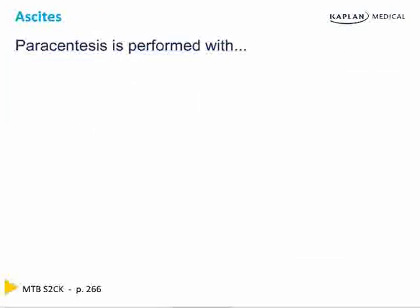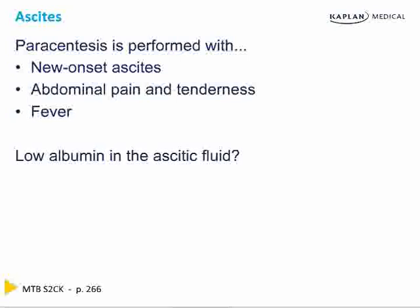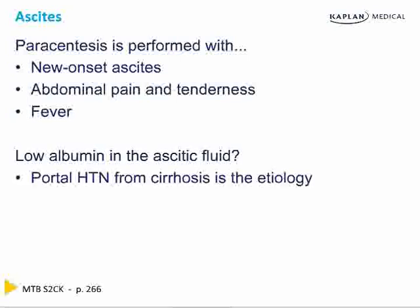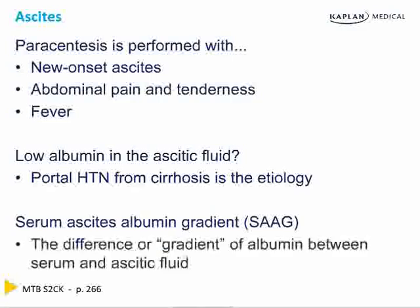Abdominal paracentesis is performed with new onset of ascites, abdominal pain and tenderness accompanied by fever. Does your patient have low albumin in the ascitic fluid? If so, he has portal hypertension from cirrhosis as the etiology of the ascites. But to be 100% sure, you should calculate a serum ascites-albumin gradient, or the SAG ratio — the difference in albumin between the serum and ascitic fluid.